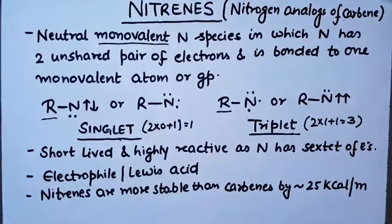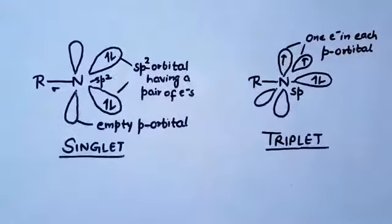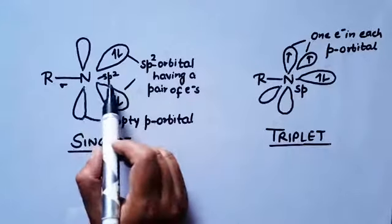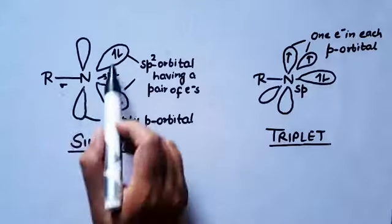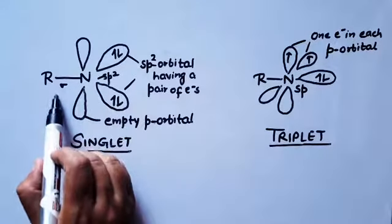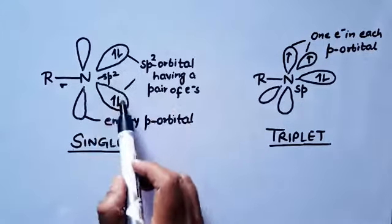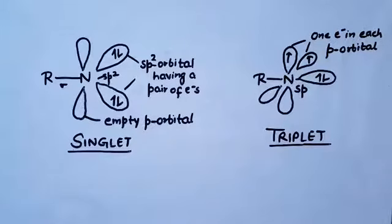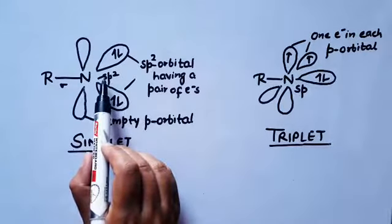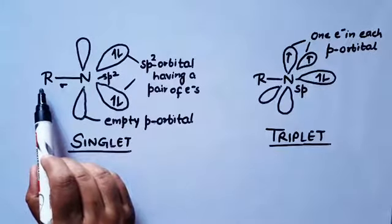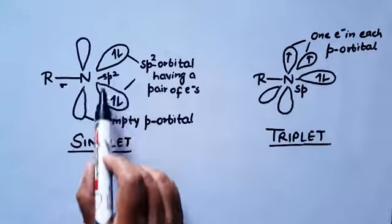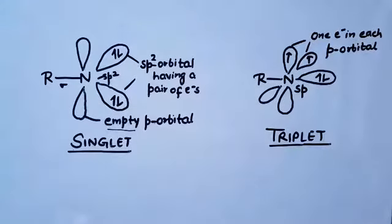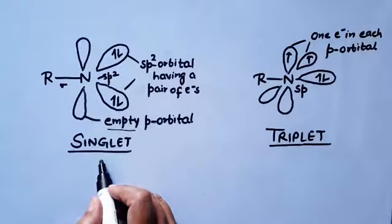Now we move on to the structure of nitrenes. Two types of nitrenes are possible: singlet and triplet. In singlet nitrene, nitrogen is sp2 hybridized, giving 3 sp2 hybrid orbitals. One sp2 orbital forms a sigma bond with the monovalent atom or group, and the remaining two sp2 orbitals contain 4 electrons in paired form with anti-parallel spin. The unhybridized p-orbital is empty.